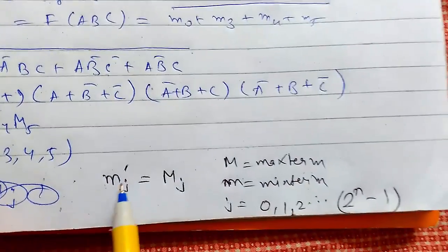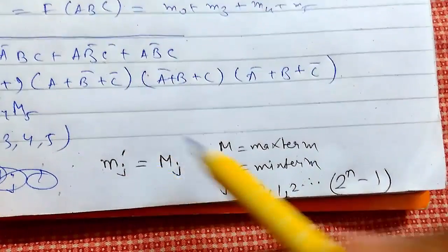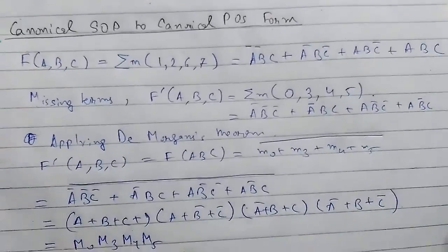For a general rule, mj complement will give Mj. So a min term complement will give the max term, where j varies from 0, 1, 2 up to 2^n - 1. So this is all about it. Thanks for watching.